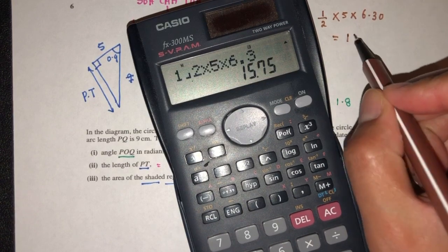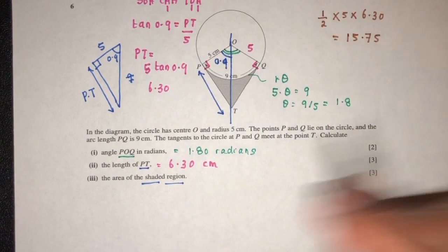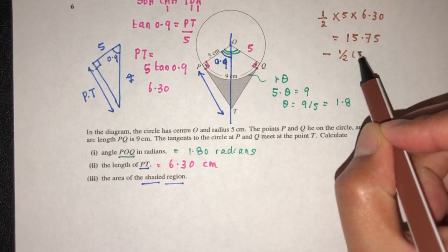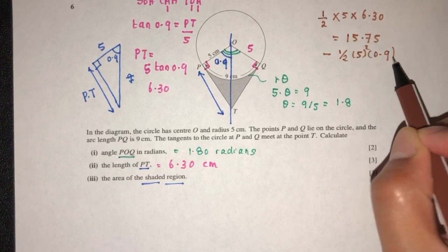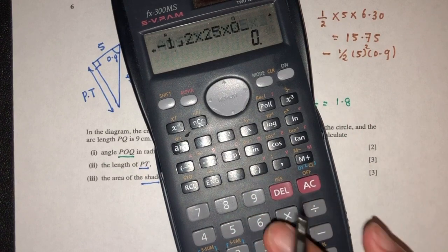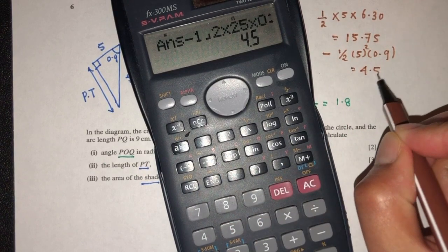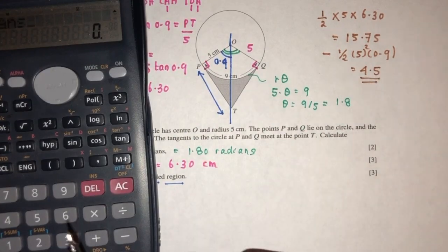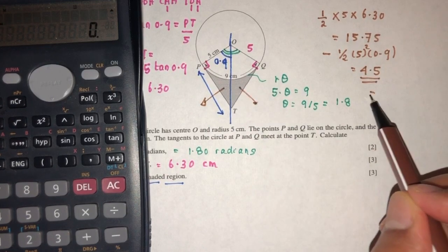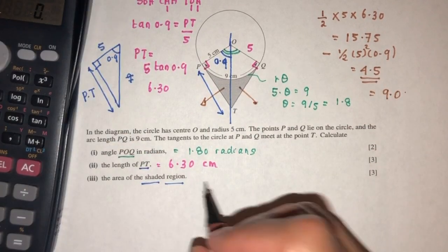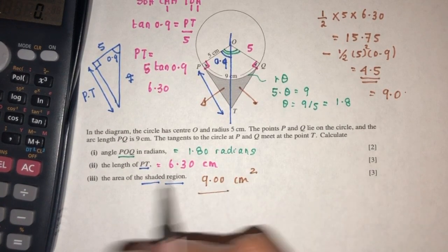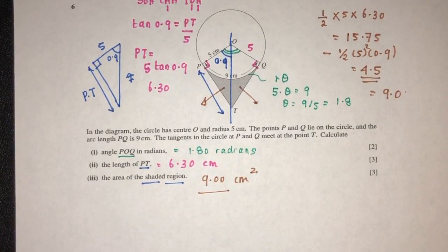Now we subtract the area of the sector: half times R squared times theta, which is half times 25 times 0.9, equals 11.25. So 15.75 minus 11.25 equals 4.5 for one side. Times 2 gives 9.00 centimeters squared for the total area of the shaded region.